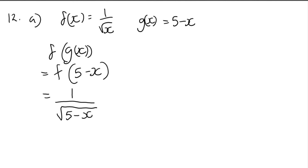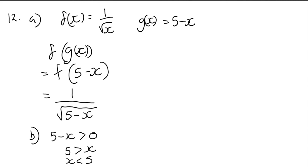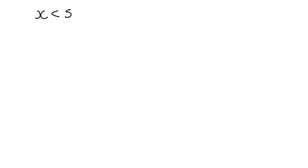Part 12b: state the range of x where it's undefined. A square root must be positive, so 5 minus x must be greater than 0, meaning x is less than 5. But that's not the answer — you were asked when it's undefined, which is the opposite. So x greater than or equal to 5 is when f of g of x is undefined.